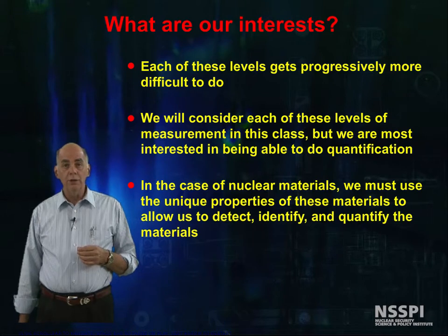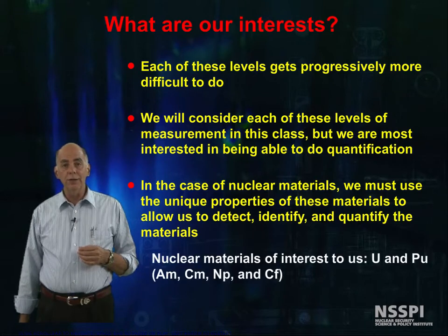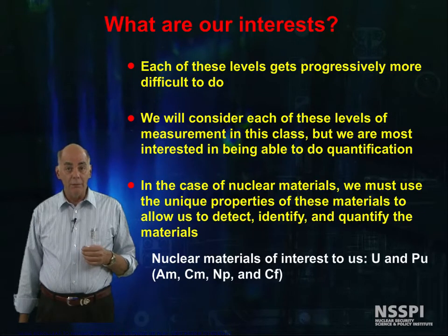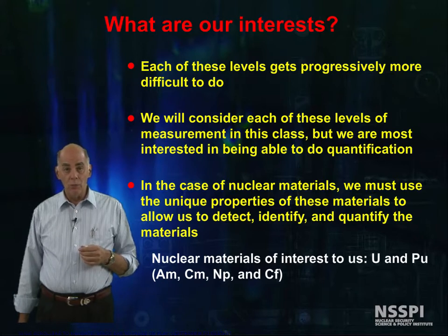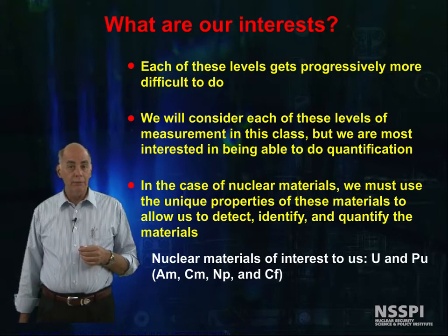The nuclear materials that are of interest to us are uranium and plutonium, and the associated minor actinides that come with them: americium, curium, neptunium, and californium.